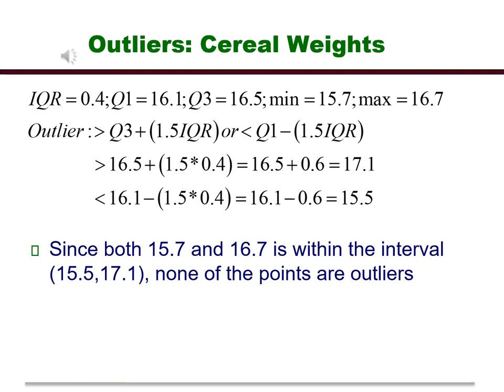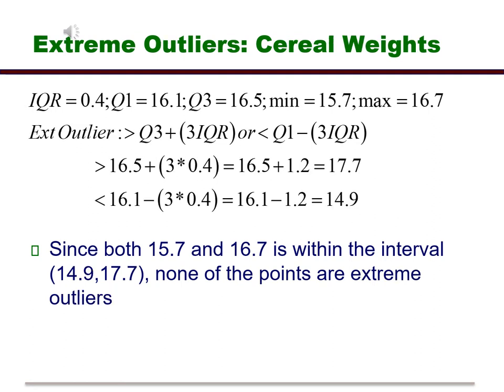Now let's check for extreme outliers. So now we know that based on the calculations, if there are no regular outliers, then there are no extreme outliers. Let's go through the motions anyways. Since both 15.7 and 16.7 are within the interval 14.9 and 17.7, none of the points are extreme outliers.